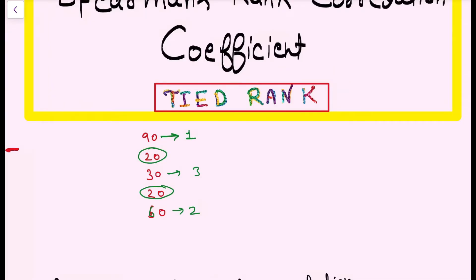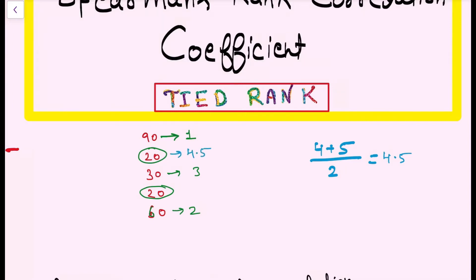How do we give rank when there is a tie? For example, if a value repeats 2 times and those values would have received ranks 4 and 5, we take their average: (4+5)/2 = 4.5. So we assign rank 4.5 to both occurrences of 20. This is how we handle tied ranking — by averaging.